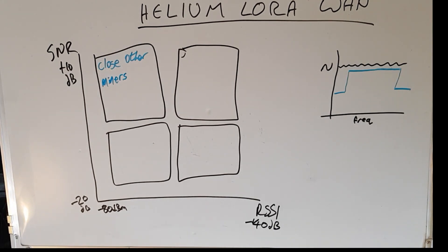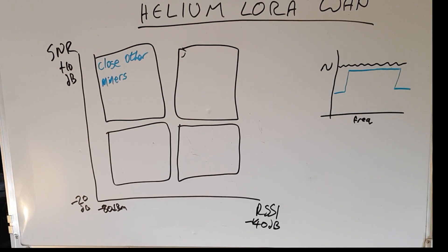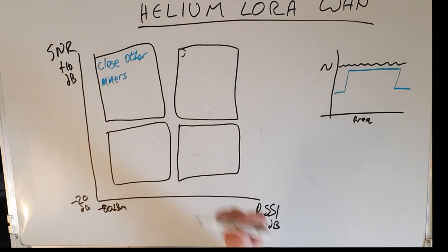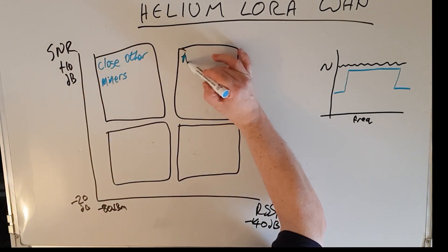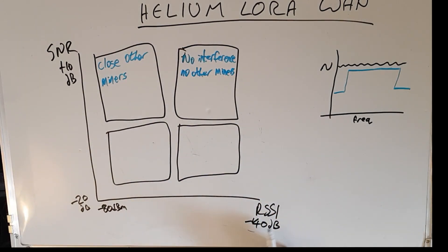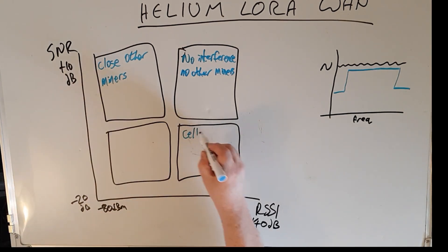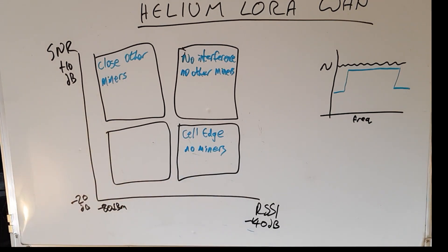In general we find that good SNR, good signal, that's because you're close to other miners. Poor coverage, good SNR, that's because there's no interference, no other miners around basically. Poor coverage and poor SNR, that occurs at the cell edge, no other coverage or miners. And finally the worst case scenario, good coverage, poor SNR. The main reason for this is simply interference.